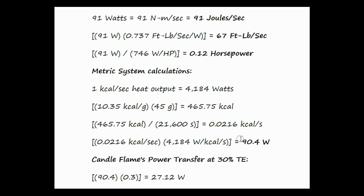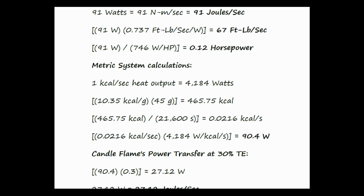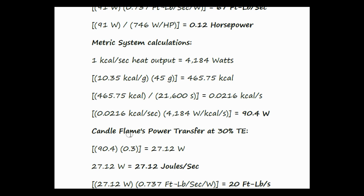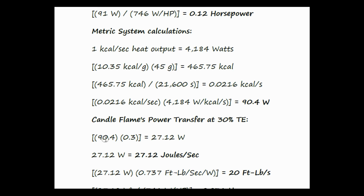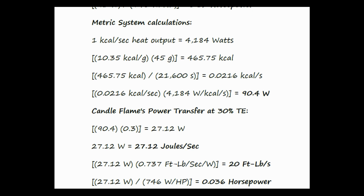Using this value calculated from the metric system for accuracy, the second part of the question asks about mechanical power output at 30% thermal efficiency. Starting with 90.4 watts of power times 0.3 (30%), 27.12 watts of power can be harnessed from the candle flame at 30% thermal efficiency. Since 1 watt equals 1 joule per second, 27.12 watts equals 27.12 joules per second.